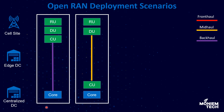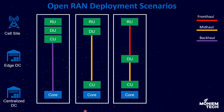Sometimes we can shift functions to an edge data center based on latency requirements or use case. There is also something called a far-edge data center, which is even closer to the cell site. The third scenario is that DUs for multiple sites can be pooled at a location within kilometers away from the cell site, and the small data center hosting these DUs is referred to as an edge data center.